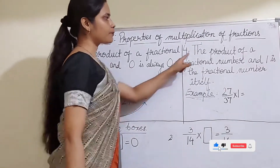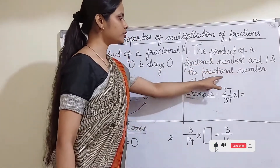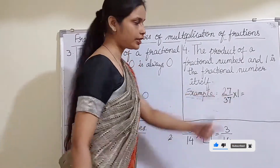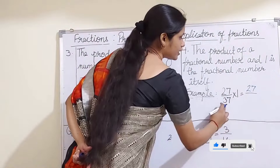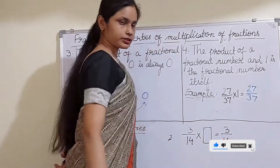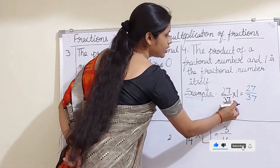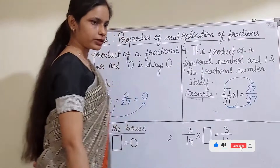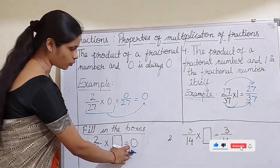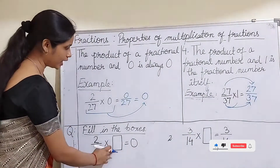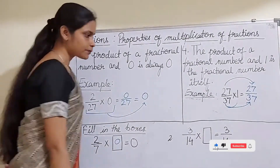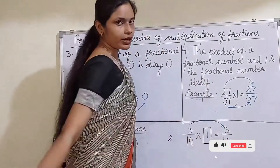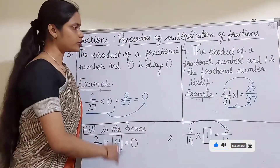The next property says the product of a fractional number and 1 is the fractional number itself. For example, 27/37 multiplied by 1: in the numerator 27 × 1 = 27, and in the denominator 37 × 1 = 37. So the result is 27/37 — the fraction number itself. Now for practice: 2/7 multiplied by what number gives zero? It is zero. And 3/40 multiplied by what number gives the same number? It is 1.